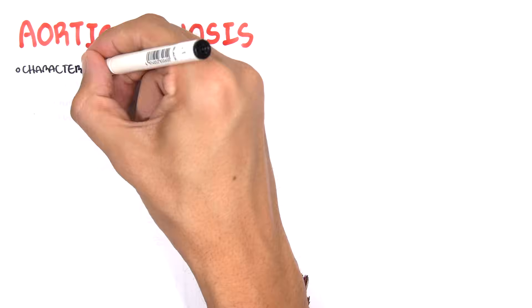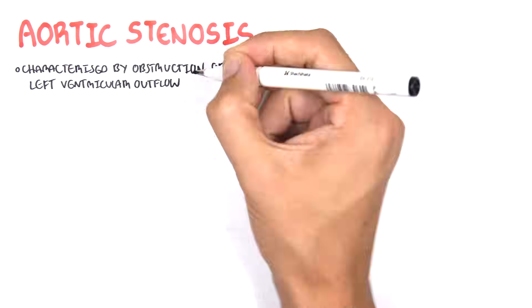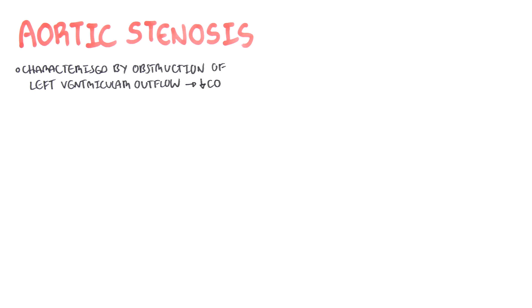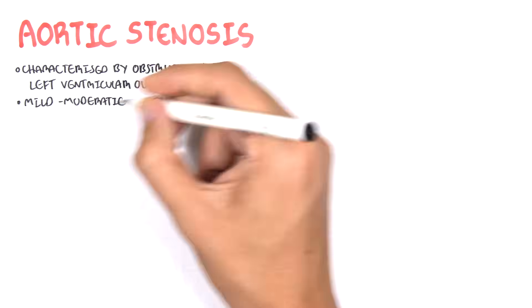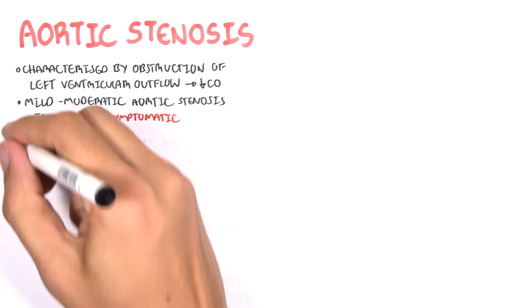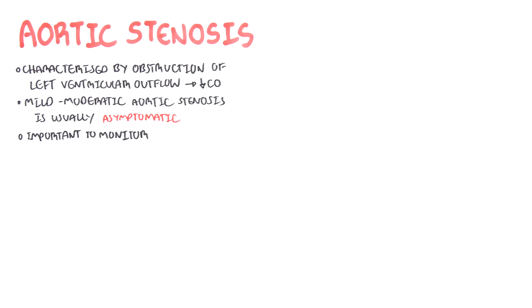Aortic stenosis is characterized by obstruction of the left ventricular outflow, resulting in a decrease in cardiac output. Aortic stenosis can be mild to moderate and is usually asymptomatic, but it is always important to monitor the stenosis that occurs in the aorta.